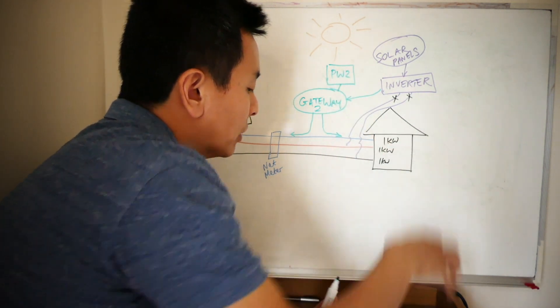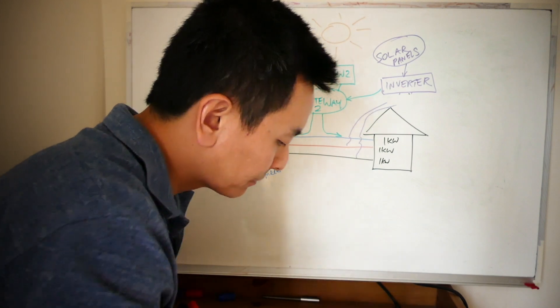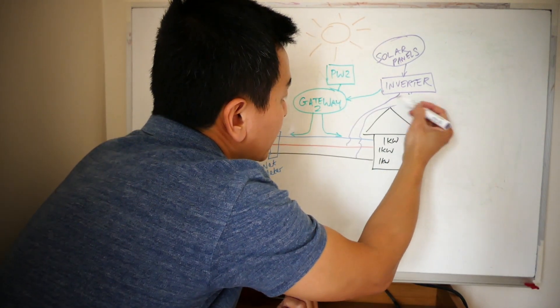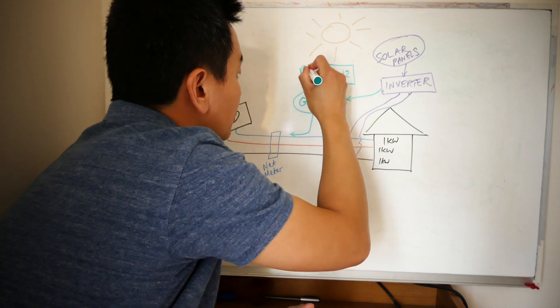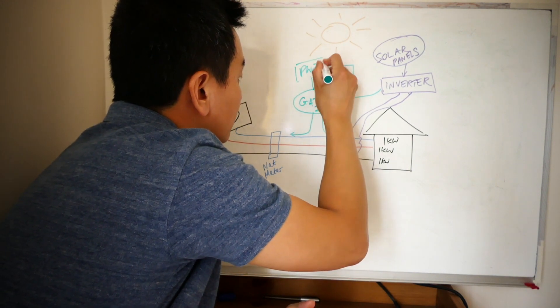So, what if you've got—let's cross these out for a second so that looks a bit nicer. Let's put that back there, let's put that back here. So what if you've got three Powerwall 2s like that?